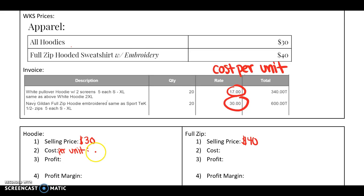Our cost per unit of the hoodie is $17. And for cost per unit, forgot to put that in there, for the full zip is $30. So you can see why we price those differently because it costs us different things.